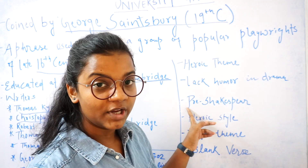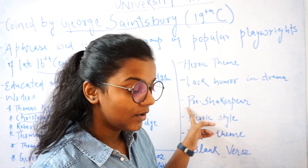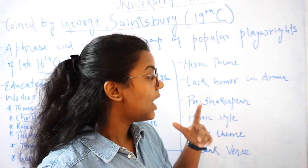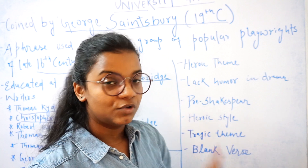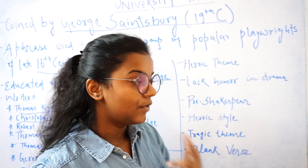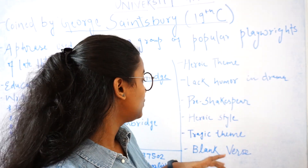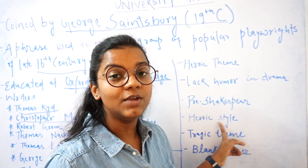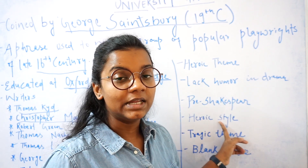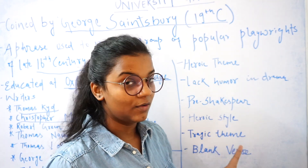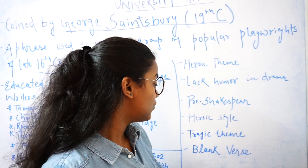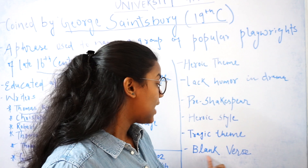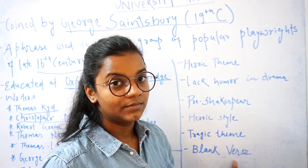They were writing before Shakespeare, and one thing to remember is that Shakespeare took many of his ideas from Christopher Marlowe, from George Lily, and from the writer Thomas Kidd. Also, their theme was mostly heroic and their style was also in a heroic style. One more thing: they were writing in blank verse as their poetical form.